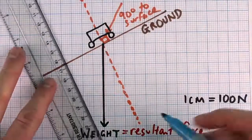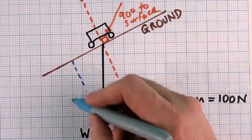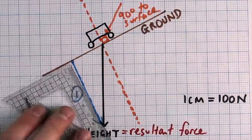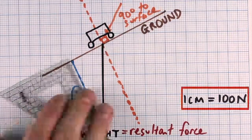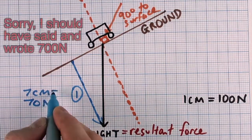Thirdly, draw a line parallel to the dashed line that starts at the ground surface, and stops at the tip of the weight arrow. This is one of the components we need. We'll call this vector 1. So that's 70 newtons.